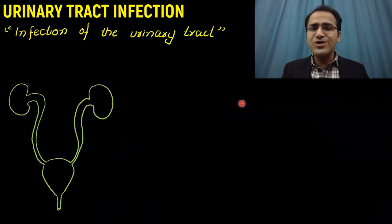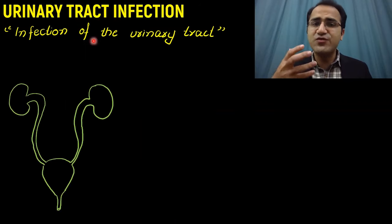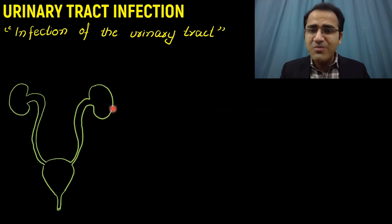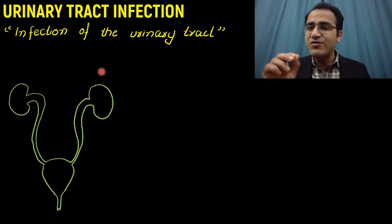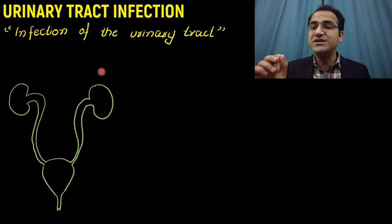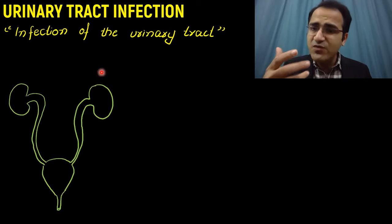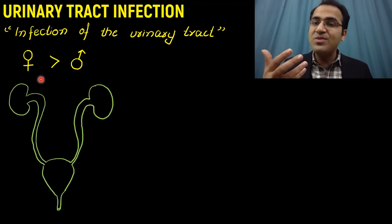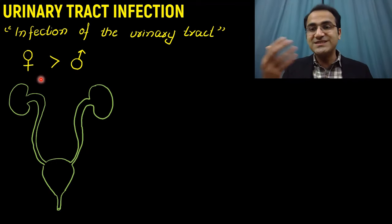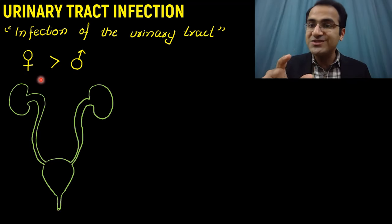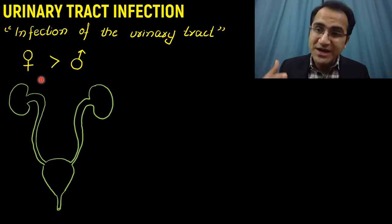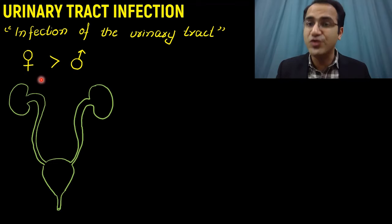UTI, as its name shows, is the infection of the urinary tract. There are several parts of the urinary tract, and each part of the urinary tract infection has a different treatment and a different presentation. Urinary tract infection is more common in females compared to males due to the shorter length of the urethra, where it is easier for bacteria to gain entry into the urinary system.